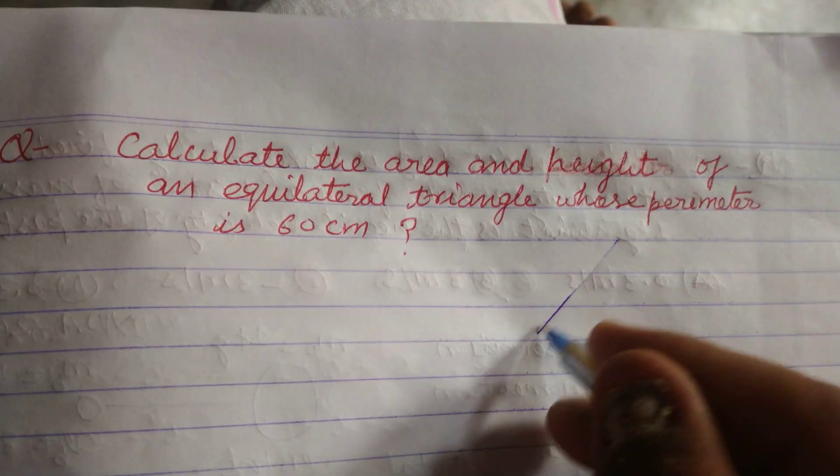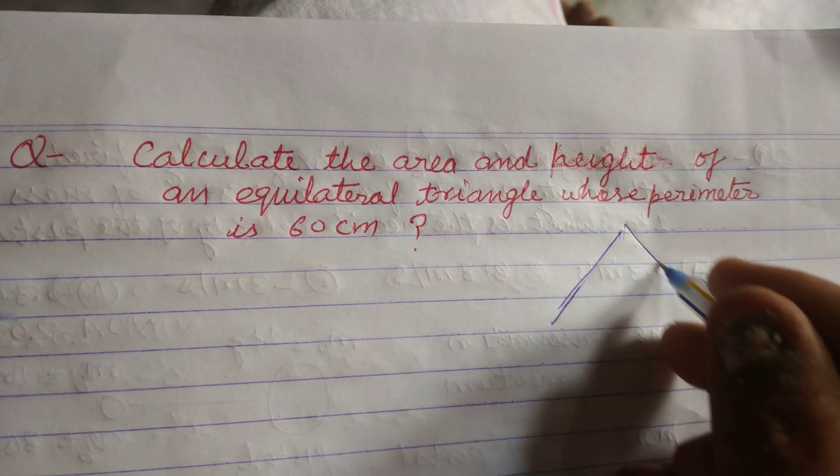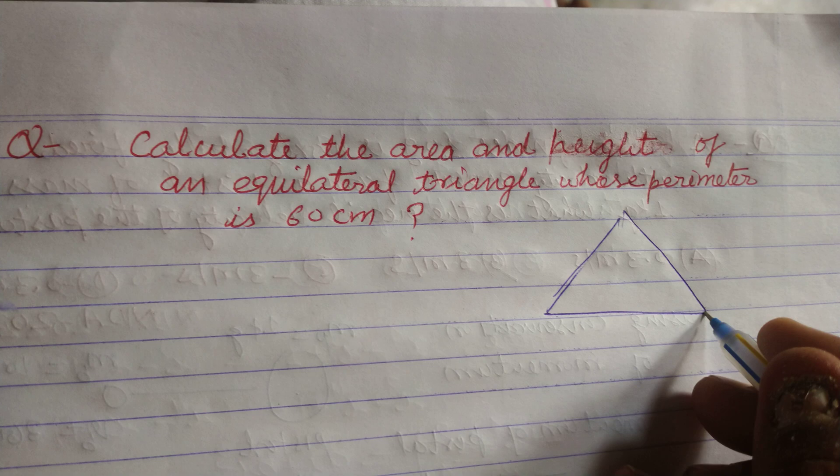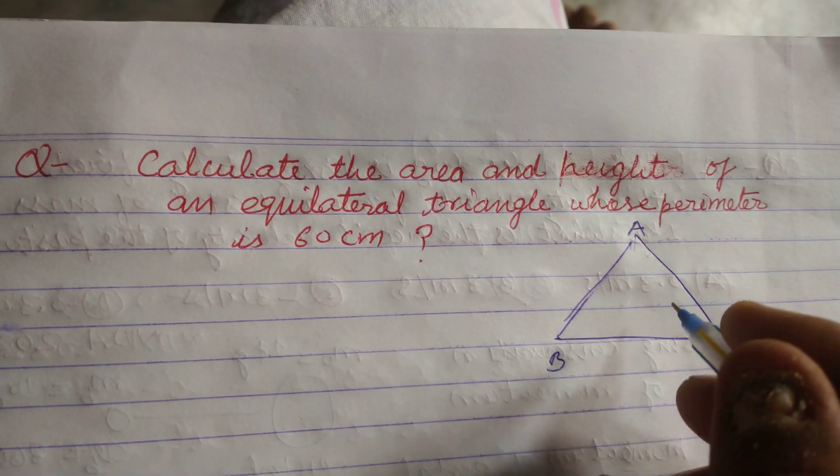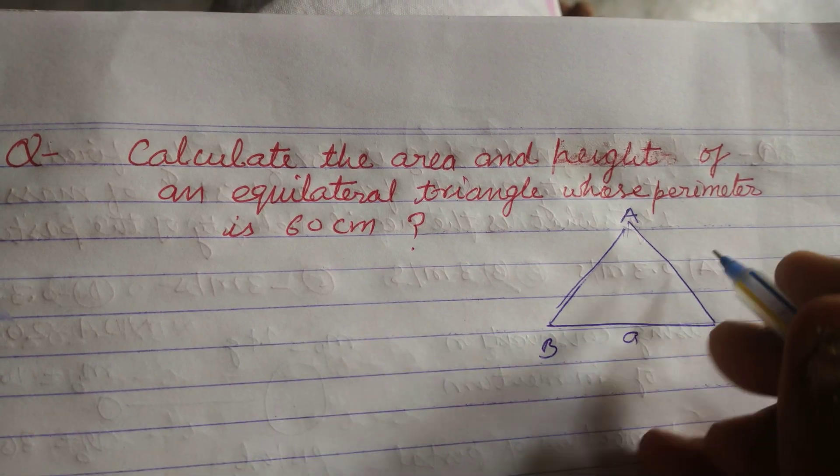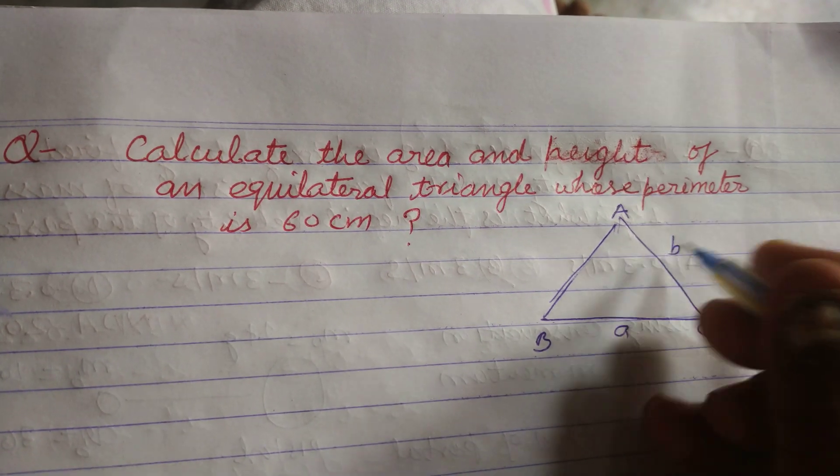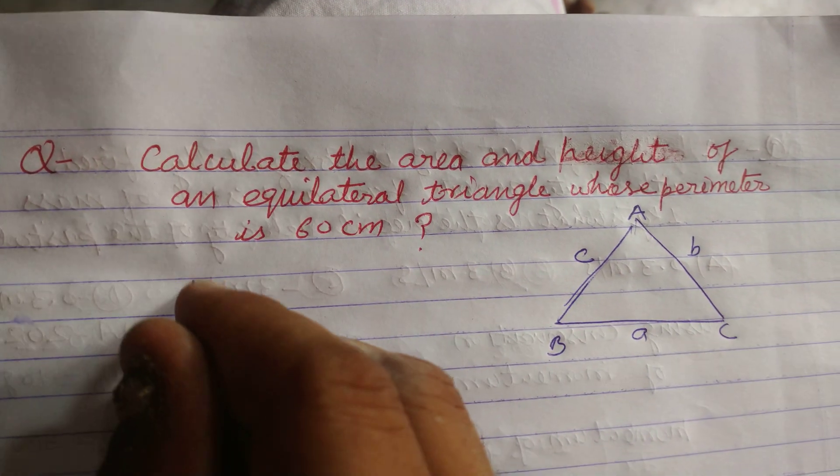So students, first we draw an equilateral triangle here. It is ABC and the opposite side is a small a, and this is b, and this is c.